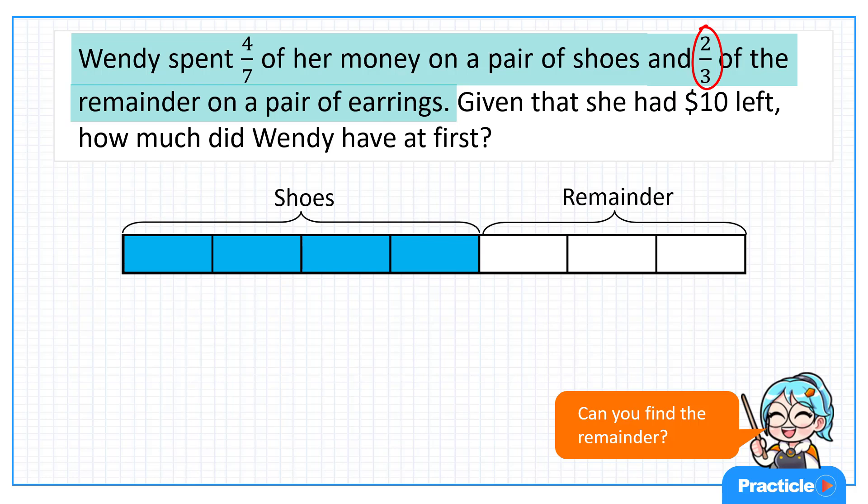And since we already have three parts for the remainder, we are going to label two of them as how much Wendy spent on the earrings. Following so far?